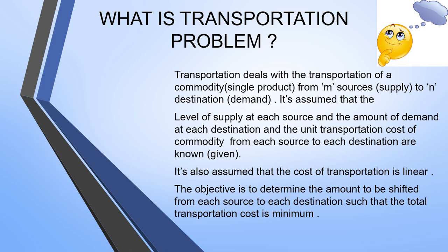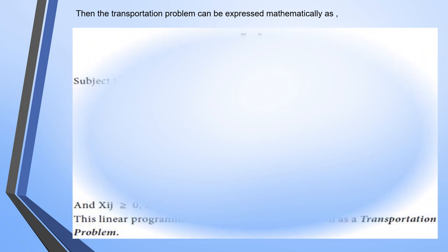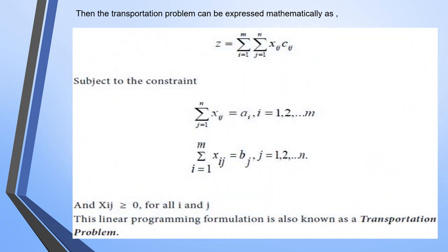The overall objective of the transportation problem is to determine the amount to be shifted from each source to each destination such that the total transportation cost is minimum. Here is the mathematical representation of the transportation problem. Xij refers to the amount supplied for transferring and Cij is the cost of transportation. This linear programming formulation is also known as a transportation problem.